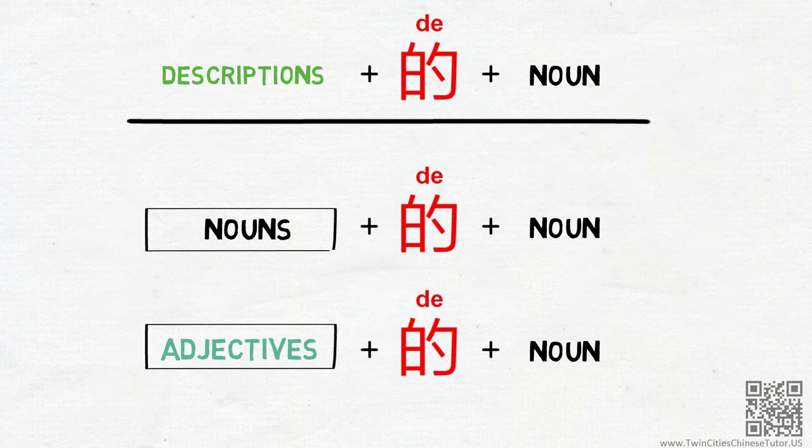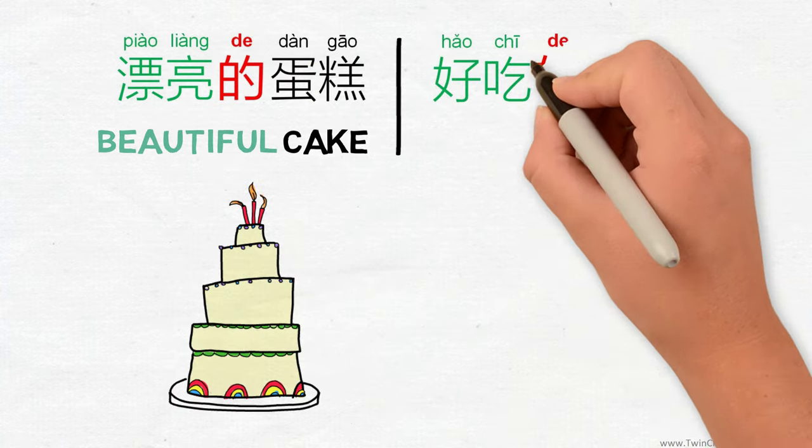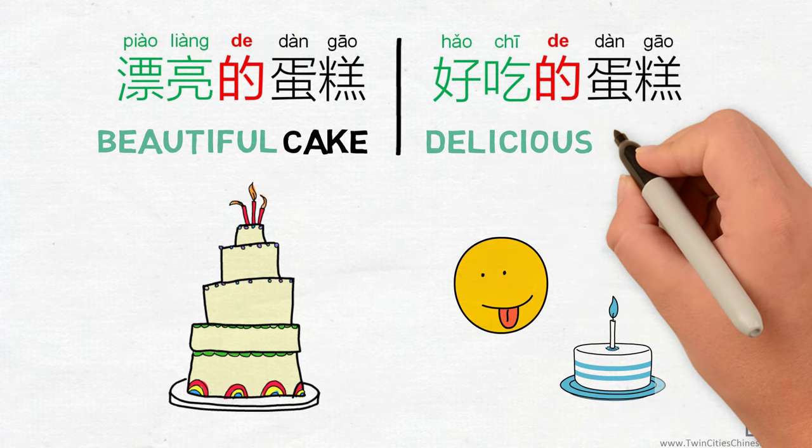We can also add adjectives before DE. For example, 漂亮的蛋糕 means beautiful cake. 好吃的蛋糕 means delicious cake.